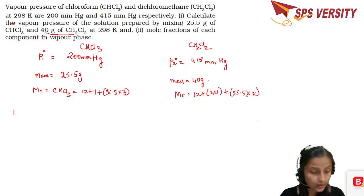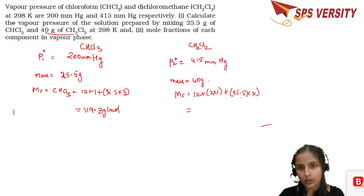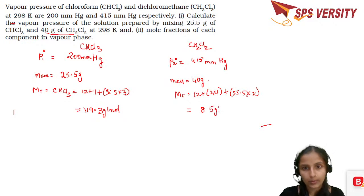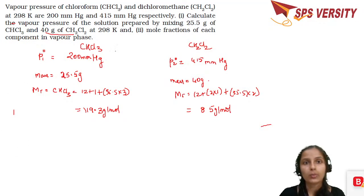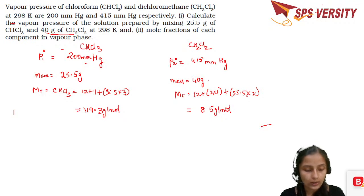For CHCl3, the molar mass comes out to 119.3 g/mol, and for CH2Cl2 we get 12 + 2 + 71 = 85 g/mol. What we need to find is the vapor pressure of the solution after mixing — that's P total — and also the mole fraction of each component in the vapor phase, y1 and y2.